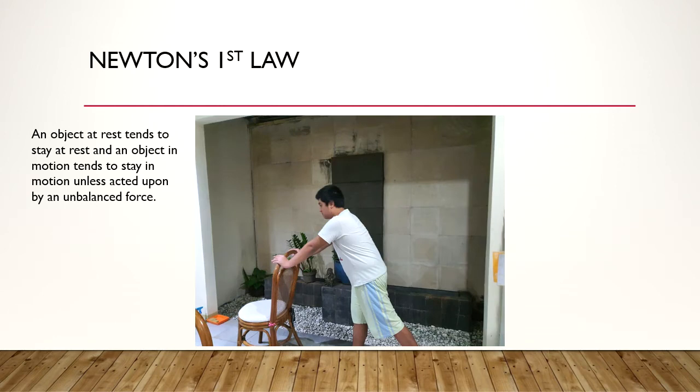Now, onto Newton's First Law. Newton's First Law, also known as the Law of Inertia, states that an object at rest tends to stay at rest, and an object in motion tends to stay in motion unless acted upon by an unbalanced force. This means that an object will keep doing what it is doing. An object that isn't moving will not move. An object that is moving will keep moving unless an unbalanced force is applied to it.